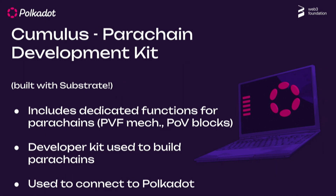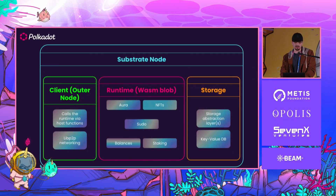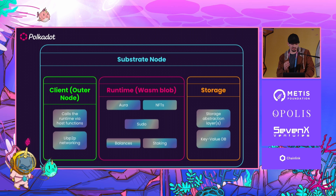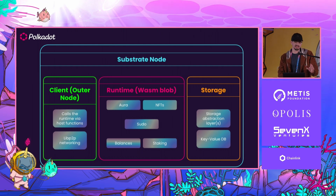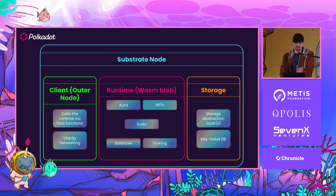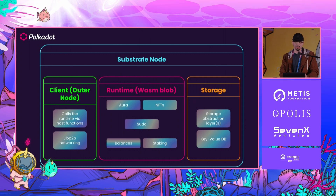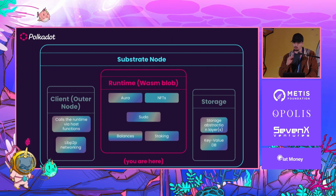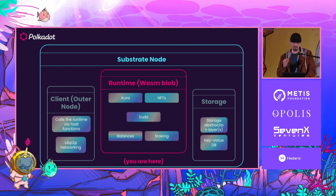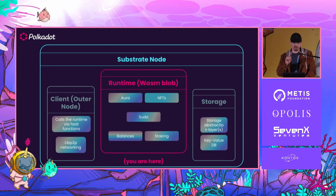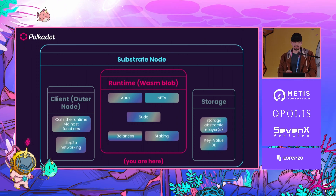Cumulus is built with Substrate and allows you to connect to Polkadot — it's basically a developer kit to build out parachains. A Substrate node is made up of three main components: the client, which handles libp2p networking and gossiping with other nodes; the runtime in the middle, which you'll be interacting with the most; and storage for the blockchain's state. The runtime is a WebAssembly blob — there's a WASM runtime inside Polkadot which takes runtimes and ensures that state transitions uploaded by a parachain are valid.